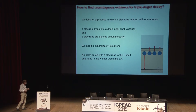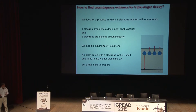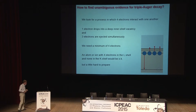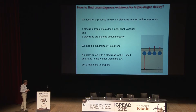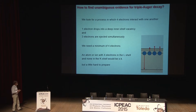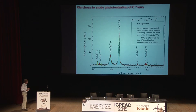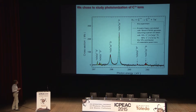Unfortunately, such a system is a little hard to prepare. It is possible with neutral targets to have a double K vacancy, but since we work with ions, and an ion beam target is dilute compared to a gas target by a factor of 10⁸ to 10¹⁰, we couldn't look for the double K-shell excitation. Instead, we looked at single K-shell excitation of carbon 1+ ions.